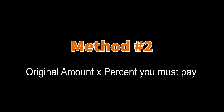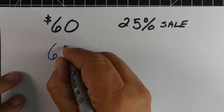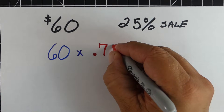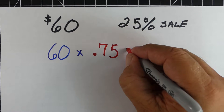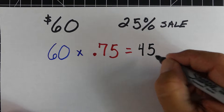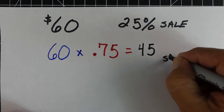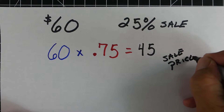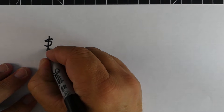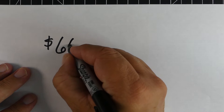For Method 2, we take the original amount but this time we multiply by the percent that you actually pay for. Using the same problem, we take the whole amount of 60 and multiply by 0.75, which is the decimal for 75%, and that gives us $45 — the sale price, just like the last method. You're probably asking yourself where the 0.75 came from.